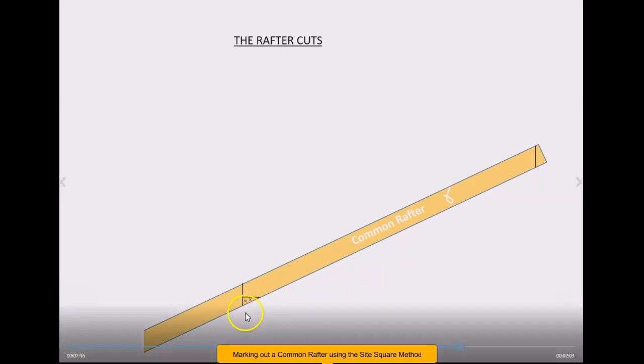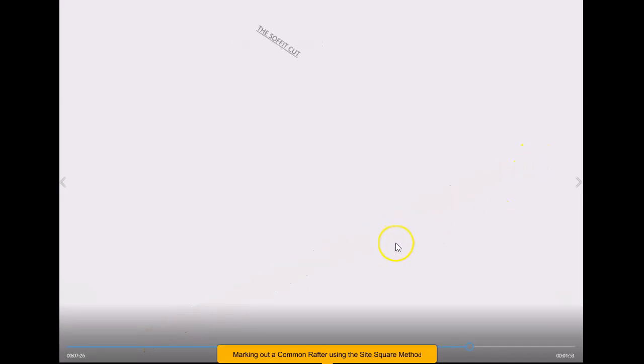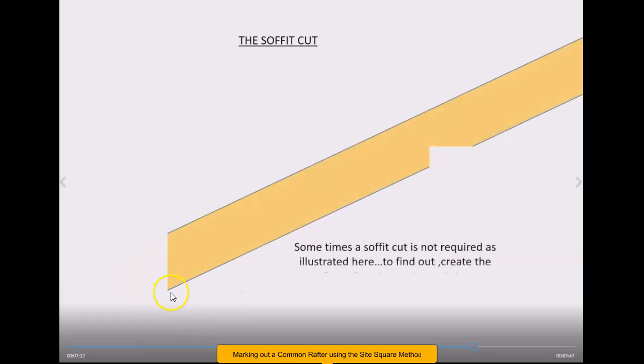So here we have then the rafter cuts. This is your fascia cut, just cut off there again. You'll be cutting this with a skill saw, here the bird's mouth, and then up at the top here you're cutting that off as well, which is still at the center of the ridge board, so we'll have to deduct later on there for half the ridge thickness.